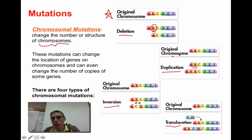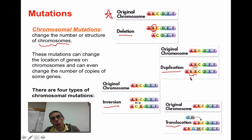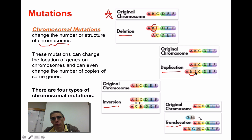For duplication, instead of taking the B out like we did with deletion, we're actually duplicating that B. So we have more chromosomal material than we're supposed to. Sometimes it's not good to have more than you should, so we could have problems here as well.